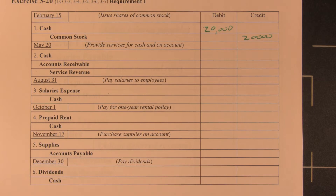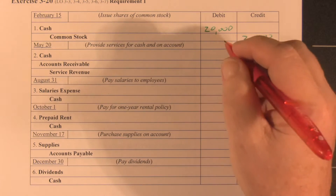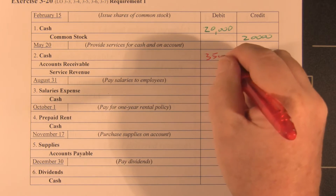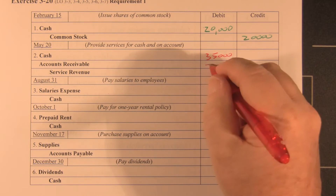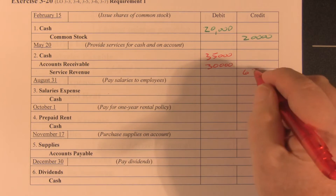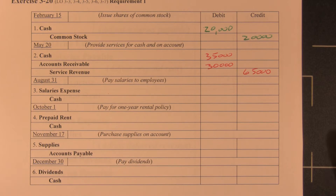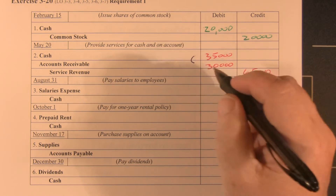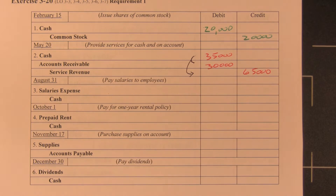On May 20th, we provided services to customers for cash of $35,000 and on accounts receivable for $30,000. So we have a $35,000 debit to cash and a $30,000 debit to accounts receivable, with a credit to revenue for $65,000. That's a compound journal entry — two debits equaling the amount of one credit.